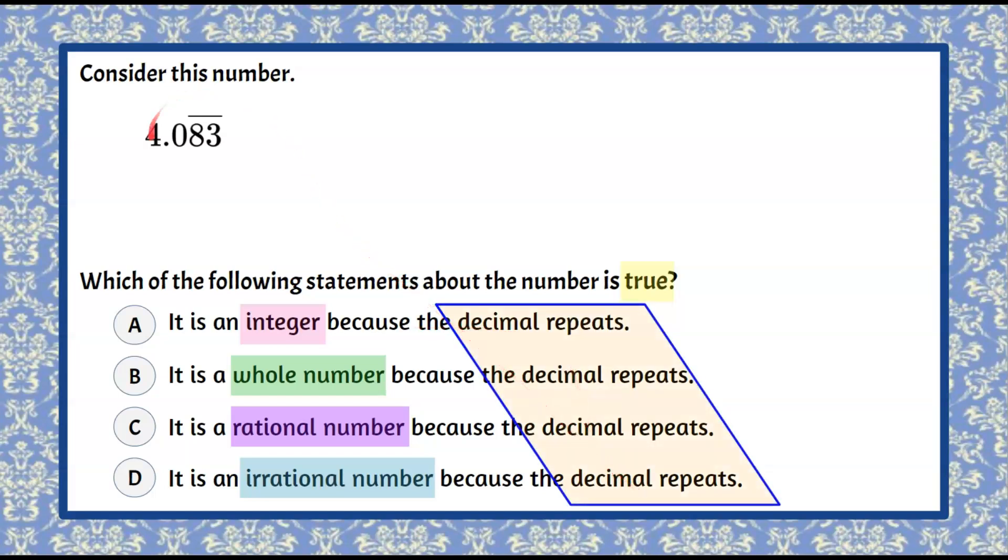So we know that that's a fact. We have a repeating decimal here. This is 4.0838383. So this little line, hat, above these two numbers is called vinculum, and it means that the 8.3 is going to continue to repeat infinitely.